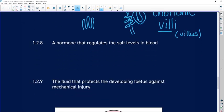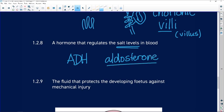A hormone that regulates salt levels in the blood. You have got antidiuretic hormone and aldosterone in relation to working with the kidney and controlling water and salt levels, and the salt levels are controlled by aldosterone.